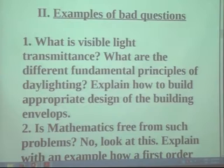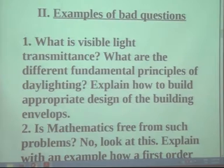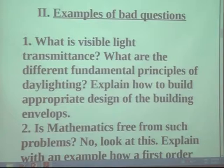A discrete memoryless binary source emits symbols 0 and 1 with probabilities p and 1-p respectively. Does this need to be stated? If one is p, the other must be 1-p because the sum must be unity. Determine channel capacity of a binary symmetric channel from first principles. Discuss the Lempel-Ziv algorithm of source coding.